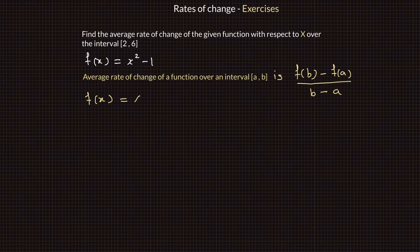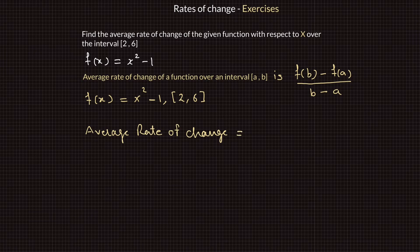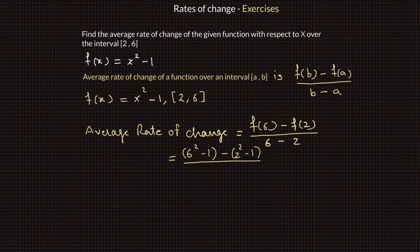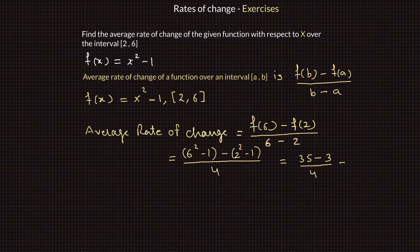Given a function f of x equals x squared minus 1, the average rate of change over the closed interval 2 comma 6 is equal to f of 6 minus f of 2 divided by 6 minus 2, which is equal to 6 squared minus 1 minus 2 squared minus 1 divided by 4, which gives 35 minus 3 divided by 4, which is equal to 8.